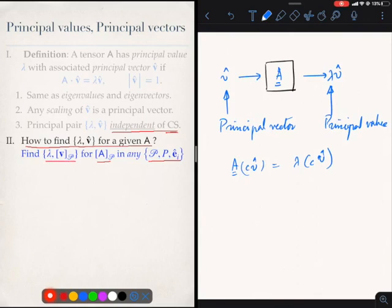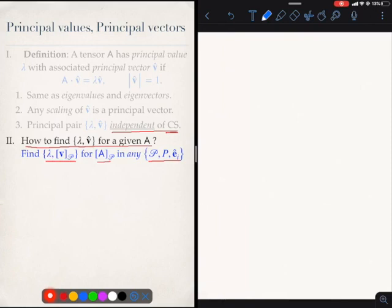Well, since it does not depend on the coordinate system, pick your favorite coordinate system, find the matrix of A in that coordinate system, and simply find the eigenvalues and eigenvectors of the matrix A in P. So suppose I have a tensor. I pick my coordinate system P, some coordinate system, and then we find the matrix of A in P. The question is simply to find the eigenvalues and eigenvectors of this matrix, which will be the principal values and principal vectors of the tensor.